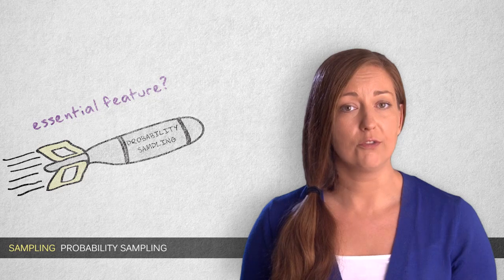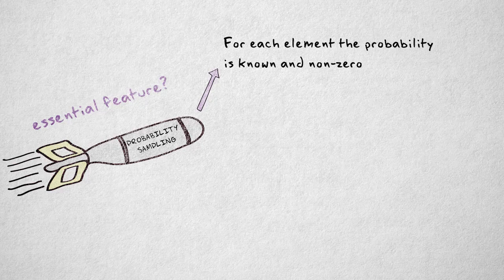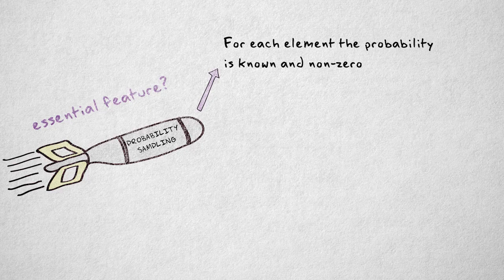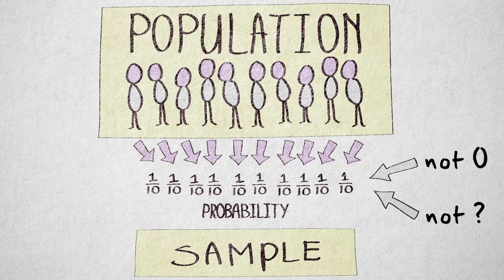The essential feature of probability sampling is that for each element in the sampling frame, the probability of being included in the sample is known and non-zero. In other words, some form of random selection is required, where any element could, in principle, end up in the sample.